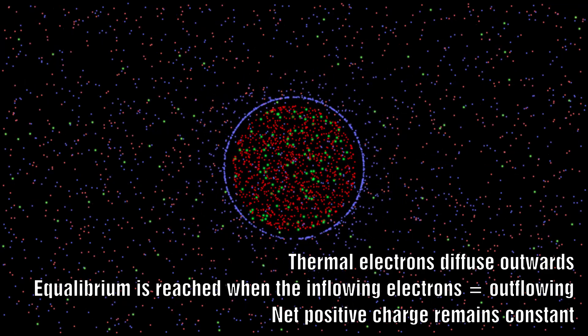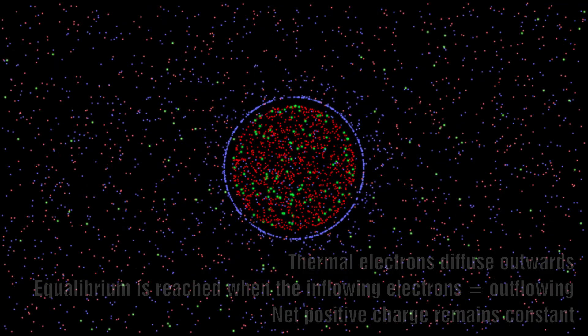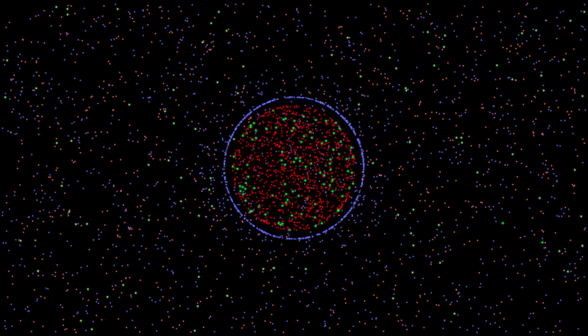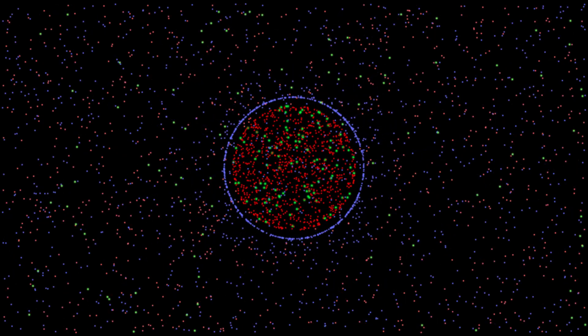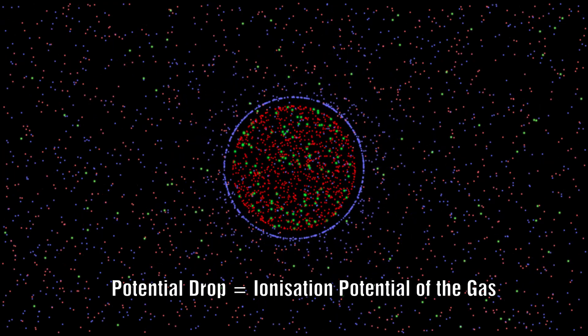In a collisional plasma at relatively high pressure the double layer becomes able to sustain itself. This happens when the potential drop across it reaches the ionization potential of the working gas.